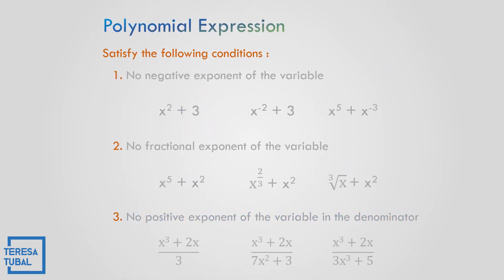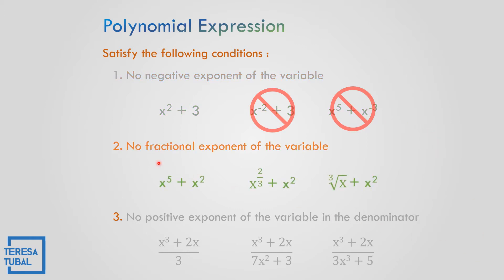Let us look at examples for condition number 1: no negative exponent of the variable. Which among the 3 expressions has no negative exponent? Correct — that is x squared plus 3, because x to the negative 2 and x to the negative 3 are negative exponents. How about the second condition — no fractional exponent of the variable? Which among the 3? Correct.